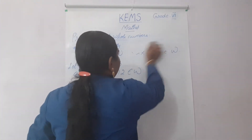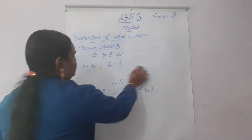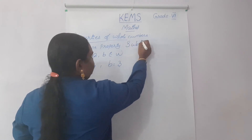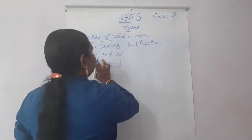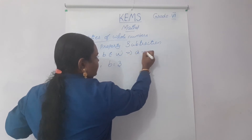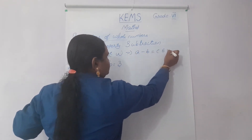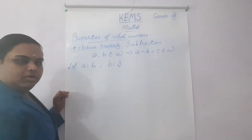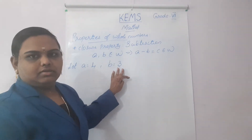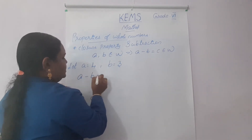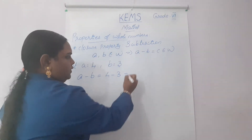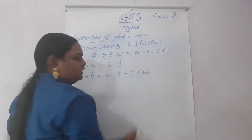Next is the closure property of subtraction. With A and B belonging to W, the condition is A minus B equals C, which should belong to W. Taking A equal to 4 and B equal to 3: A minus B equals 4 minus 3, which is 1. 1 belongs to W.